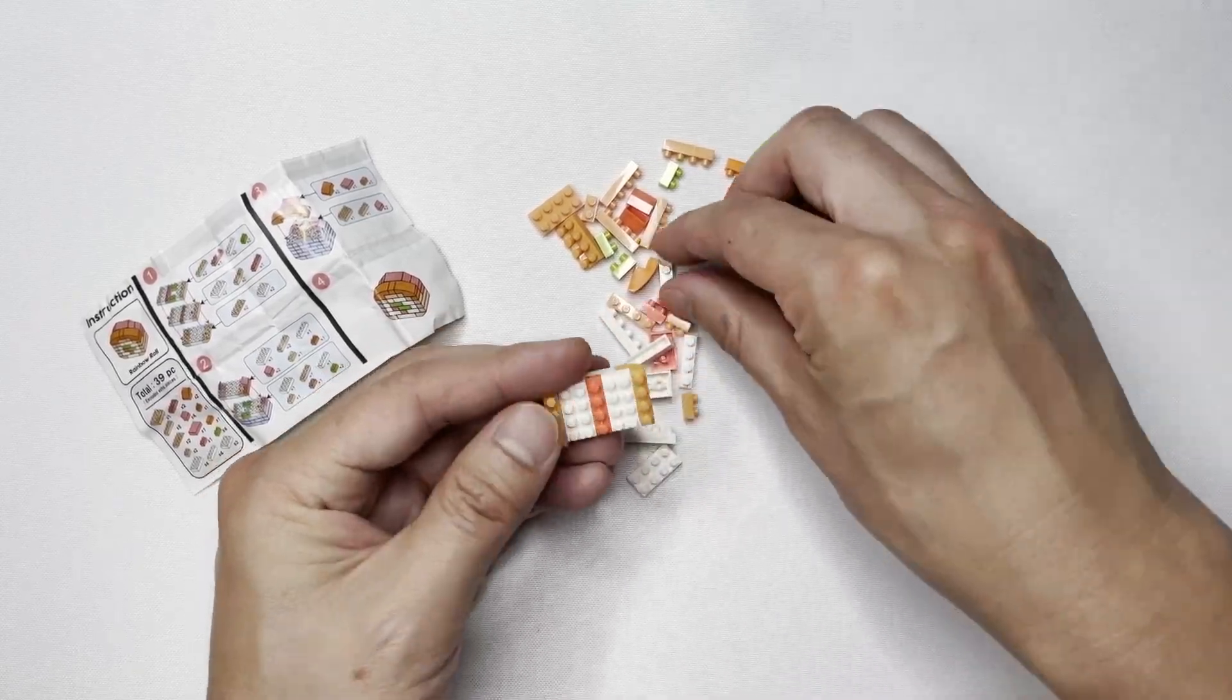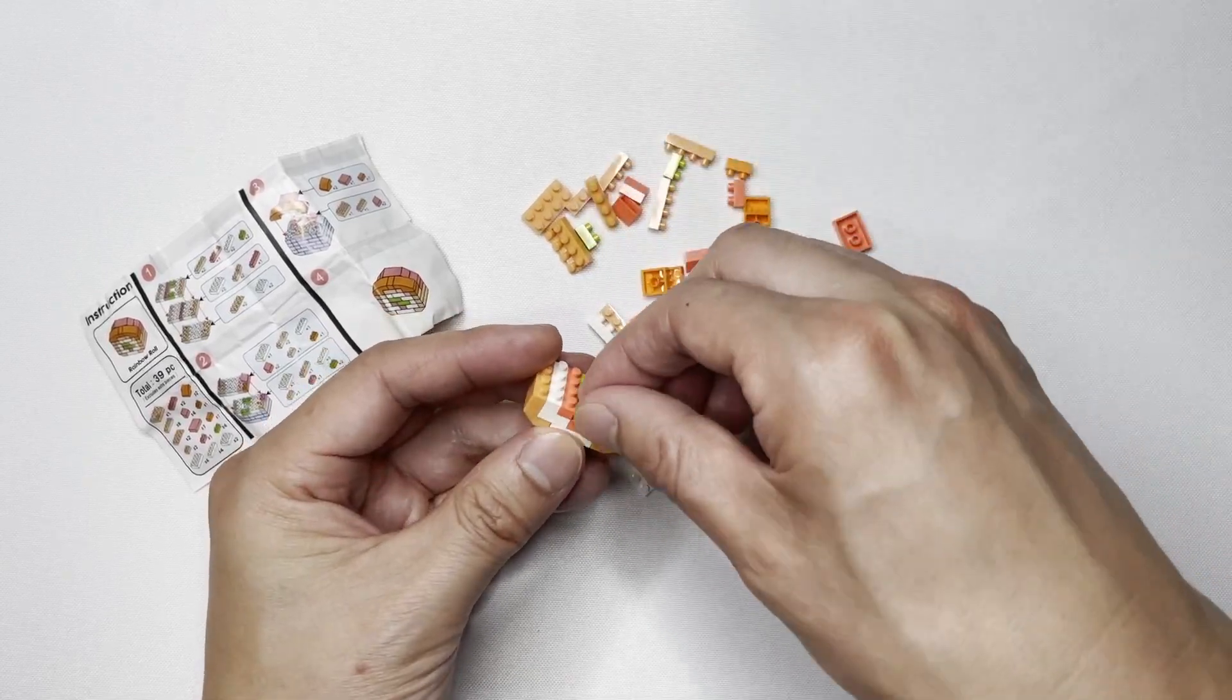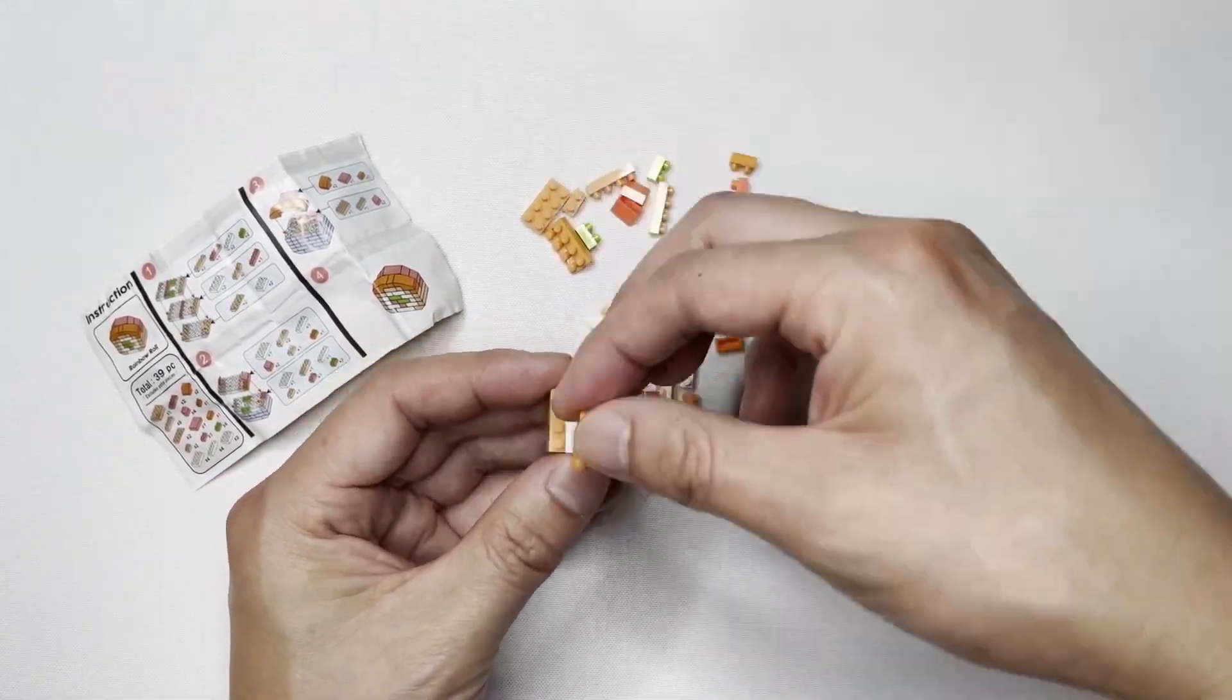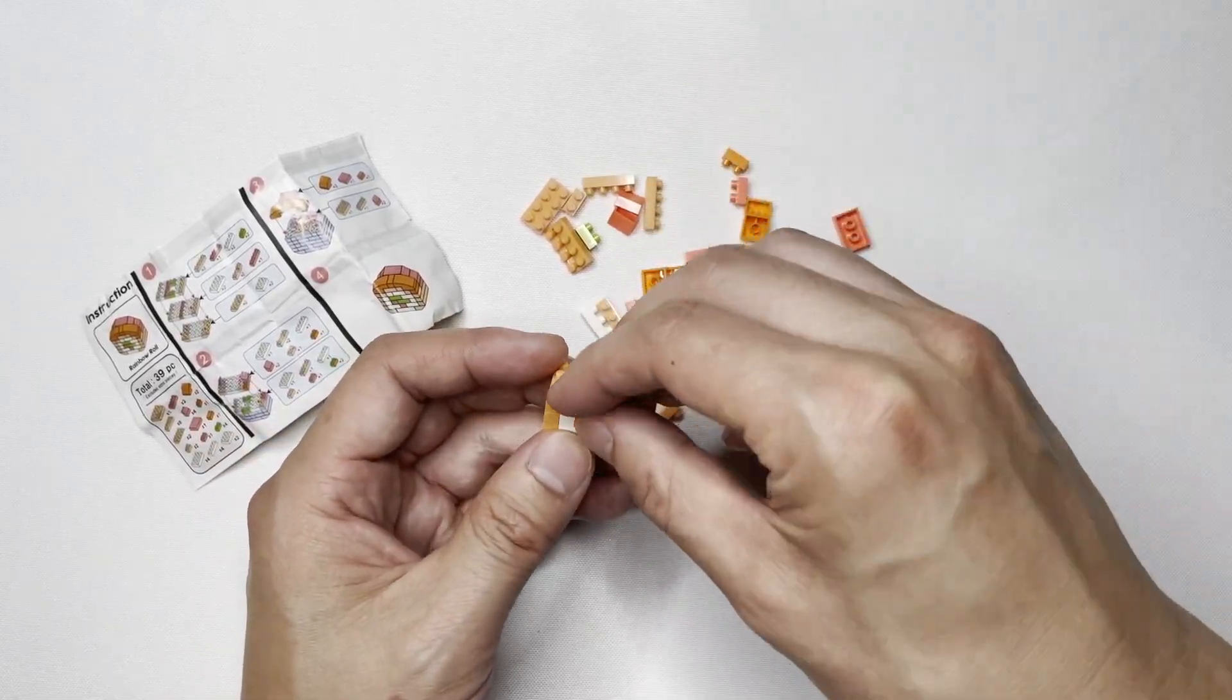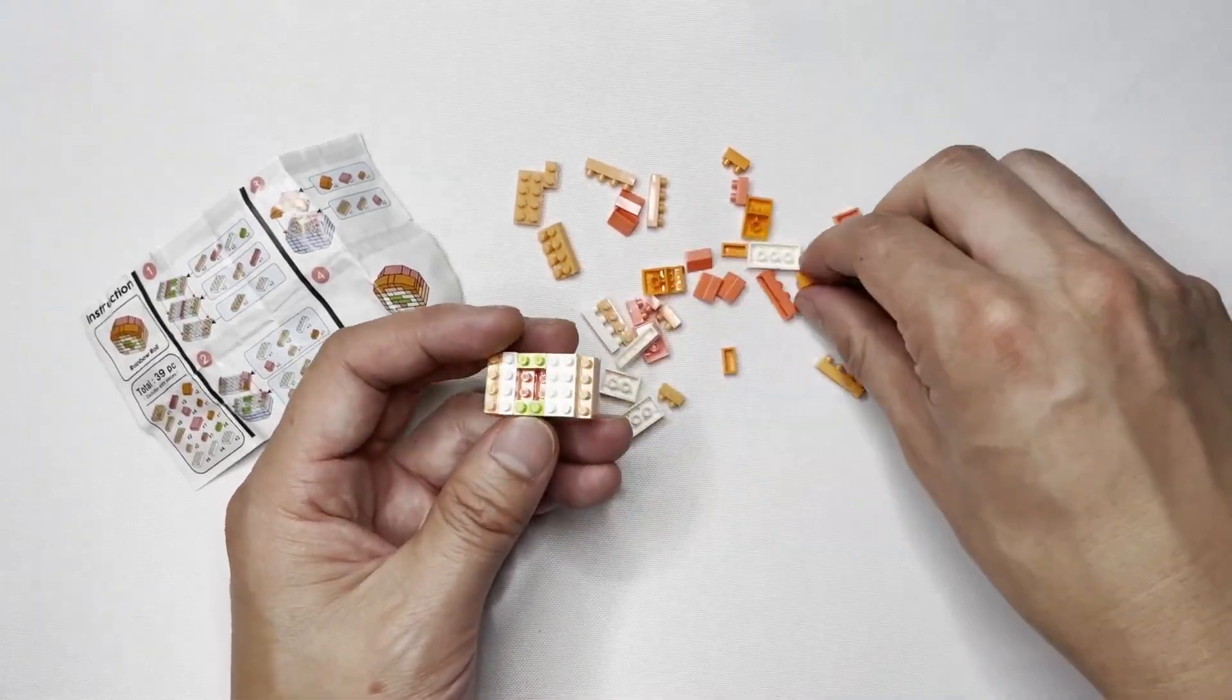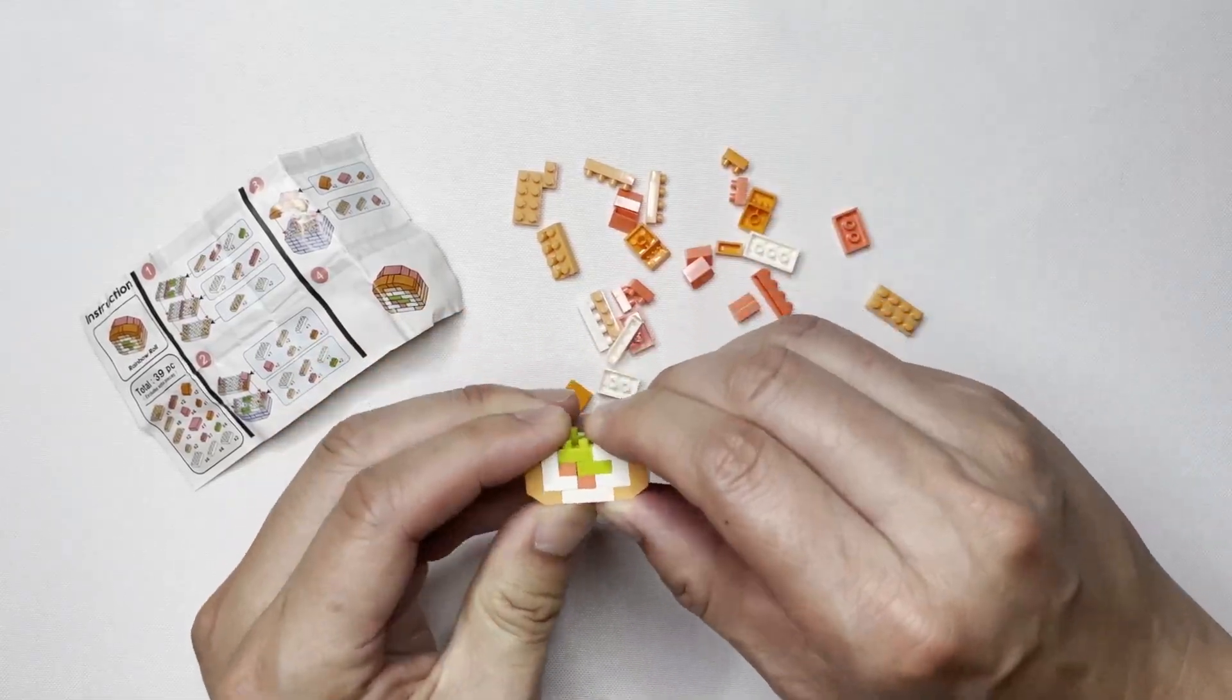These places usually charge per plate and they will serve a multitude of different nigiri which is rice with raw fish on top or different kinds of rolls. This particular restaurant, whenever you eat 15 plates of sushi, they will dispense a free prize and in this case the prizes are plastic versions of the sushi they serve which I think is pretty cool.